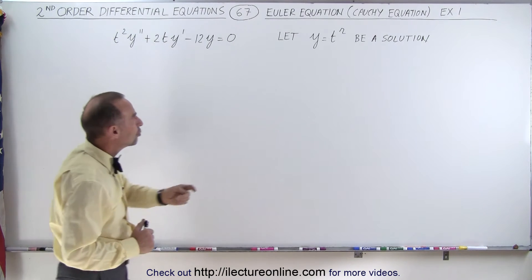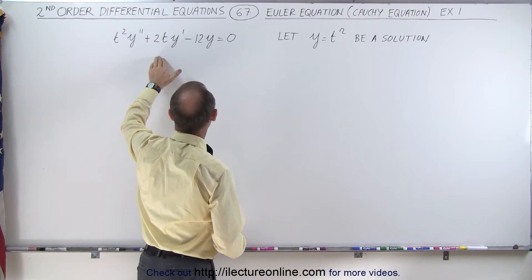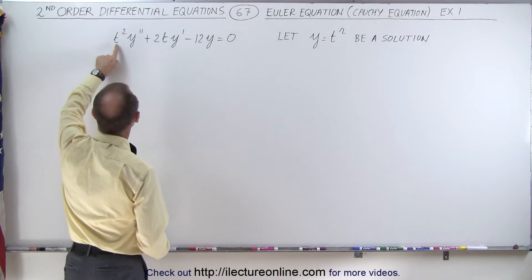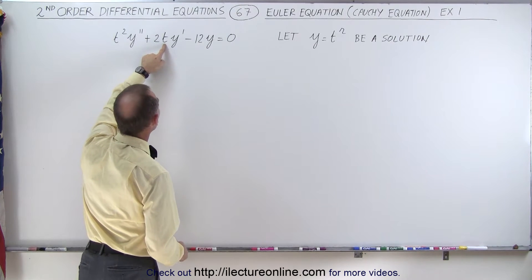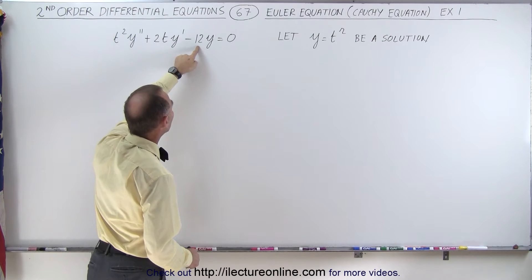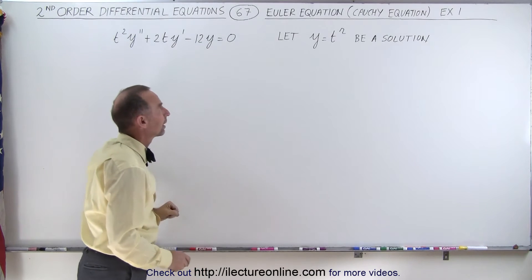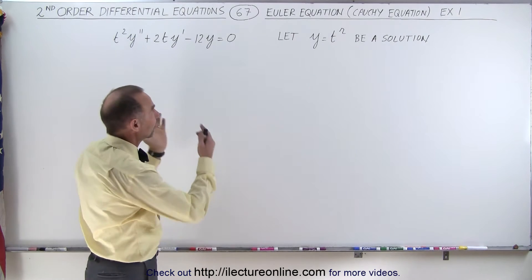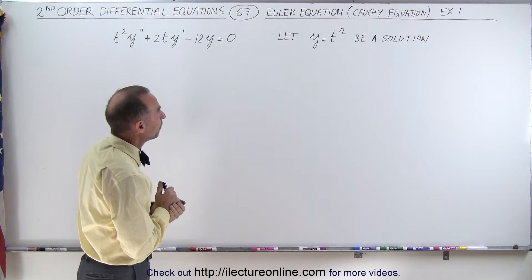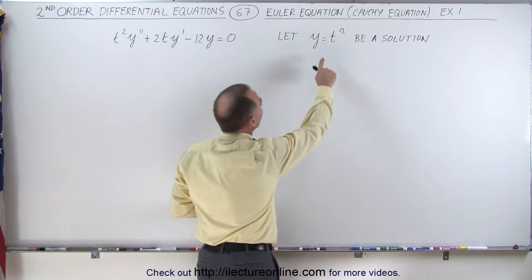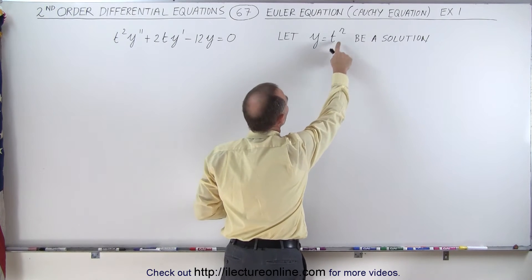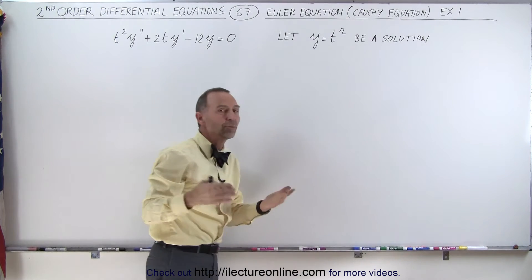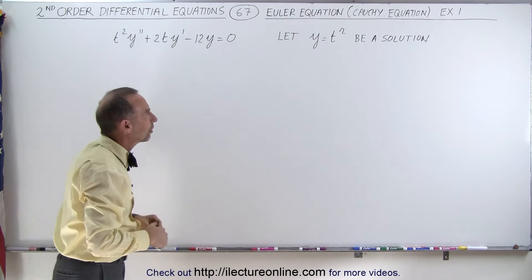We're going to assume, since this is an Euler equation—and the reason we can tell is there's a t-squared in front of y double prime, a t to the first power in front of y prime, and just a constant in front of the y term. That's how we know we have this type of equation, and the general form of the solution is y equals t raised to the r power, and we're going to assume at this point that r is greater than zero.